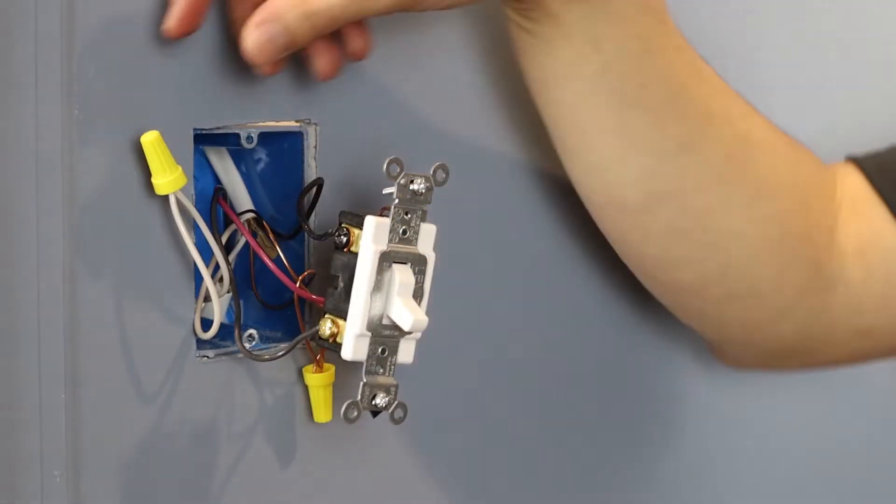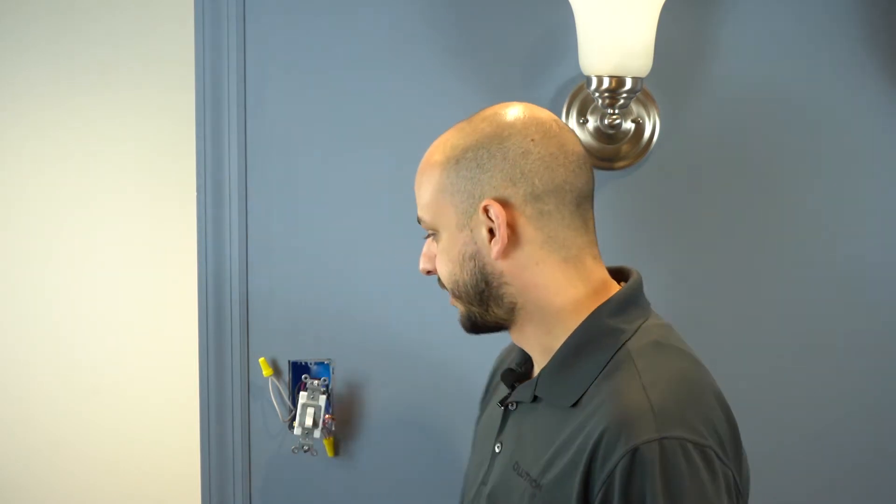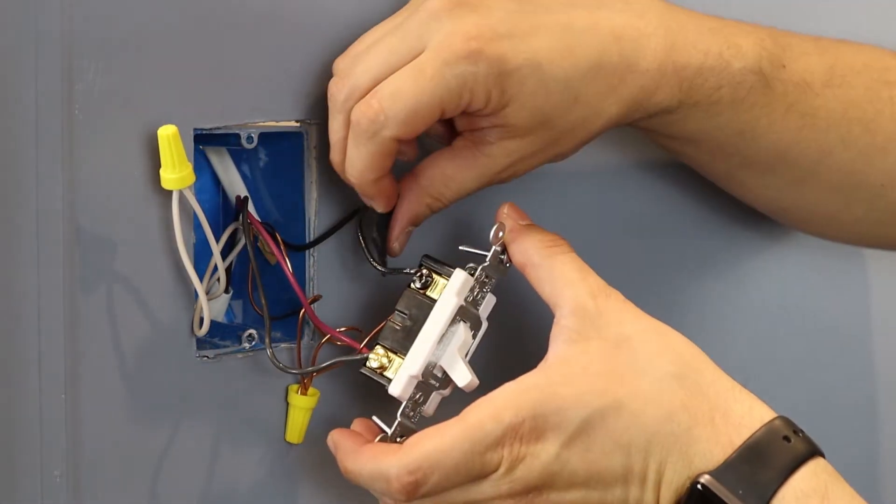Before removing your old switch from the wall, you first want to make sure that you have neutral wires. These will be two white wires in the back of your box. Next, we want to tag the common wire with a piece of electrical tape. This will be the wire connected to a different colored screw.